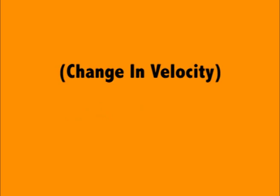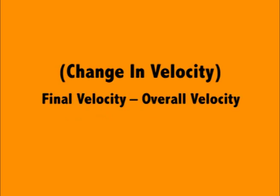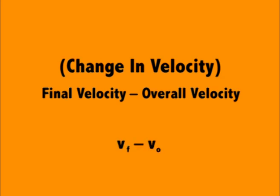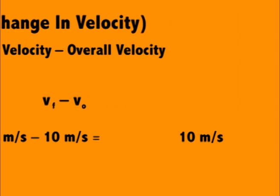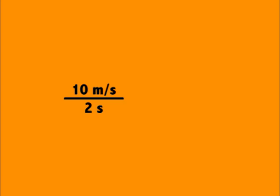Here is a way of how you can find the acceleration. To find the change in velocity, you must subtract the initial velocity from the final velocity, or v sub f minus v sub o. You would substitute 20 meters per second minus 10 meters per second, getting 10 meters per second. Now we divide by the time, which is 2 seconds, getting 5 meters per second squared as our acceleration.